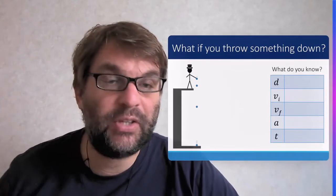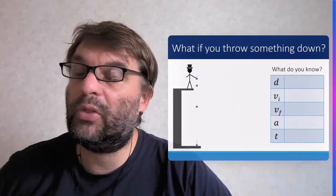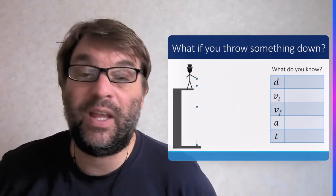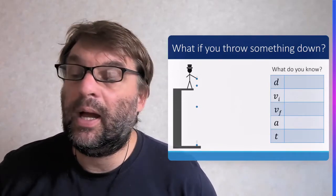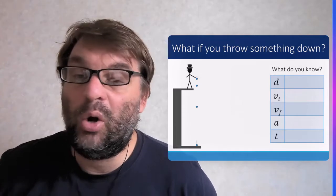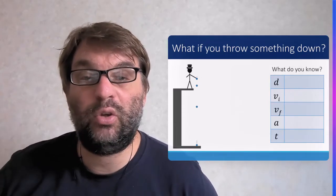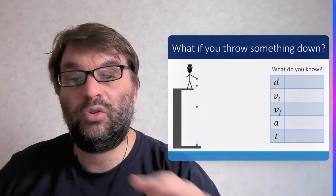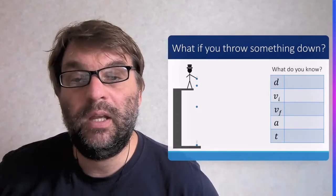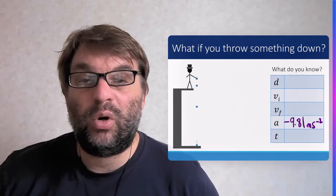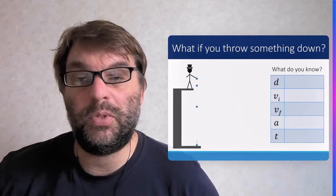And the other case that we can look at is what if you throw something down? So again, we don't know the distance. We don't know the initial velocity this time. We don't know the final velocity. All we know is the acceleration due to gravity, because now you're actually adding something to the initial velocity, so we don't know that. So those are the three kind of cases that we'll look at when we look at our freefall problems in class.